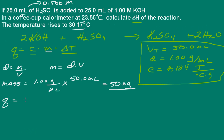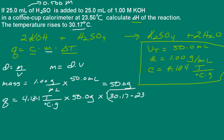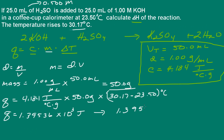Now we're ready to go. Q is equal to 4.184 joules per degree Celsius per gram, times the mass of 50 grams, times delta T — that's the final temperature minus the initial. The final temperature is 30.17 degrees and the initial temperature is 23.5 degrees Celsius. That gives us 1.39536 × 10³ joules. I'm going to convert this to kilojoules: that's 1.39536 kilojoules — all I did was divide by 1,000.